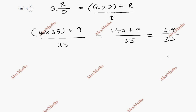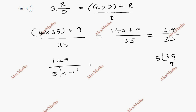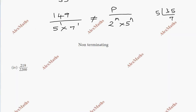The denominator 35 equals 5 into 7, so 149 divided by 5 power 1 into 7 power 1. This is not in the form of p by 2 power m into 5 power n. That's why this is non-terminating. Fourth subdivision: 219 by 2200.